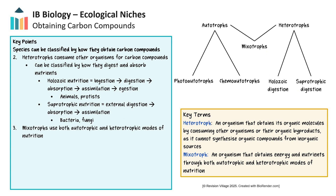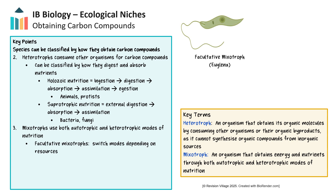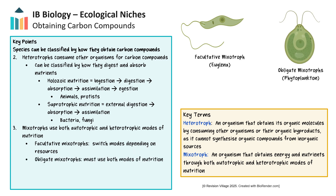Some organisms combine multiple nutritional strategies. Myxotrophs use both autotrophic and heterotrophic modes of nutrition. Euglena, a single-celled eukaryote, can photosynthesize and consume other organisms. They are facultative myxotrophs, switching modes depending on available resources. Some oceanic plankton are obligate myxotrophs, meaning they must both photosynthesize and consume organic matter to grow and reproduce. These are important primary producers in marine ecosystems.